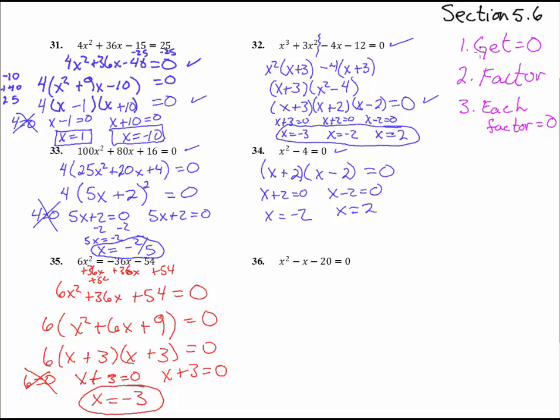Alright. Number 36. Number 1. Step number 1. Get it equal to 0. Check. Step number 2. Factor it. So we need to see. Do we pull out any greatest common factor? Nope. There's nothing there. Next step. How many terms does it have? 1, 2, 3 terms. And then leading coefficient is 1. So this is going to be a fast one.